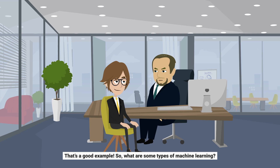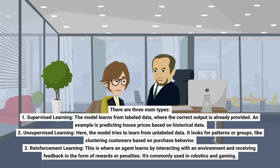That's a good example. So, what are some types of machine learning? There are three main types. One, supervised learning — the model learns from labeled data, where the correct output is already provided. An example is predicting house prices based on historical data. Two, unsupervised learning — the model tries to learn from unlabeled data, looking for patterns or groups, like clustering customers based on purchase behavior. Three, reinforcement learning — an agent learns by interacting with an environment and receiving feedback in the form of rewards or penalties. It's commonly used in robotics and gaming.